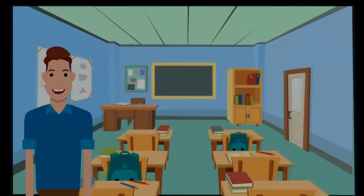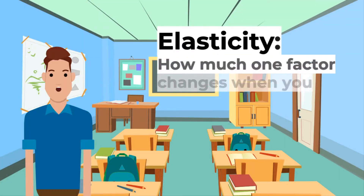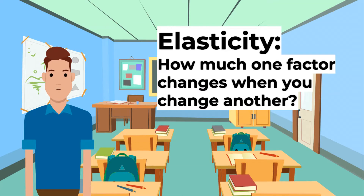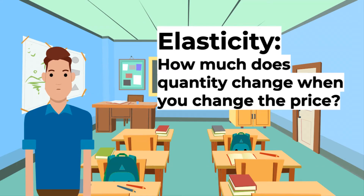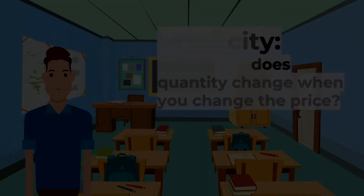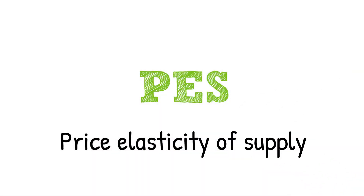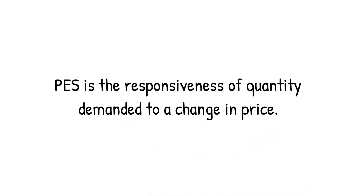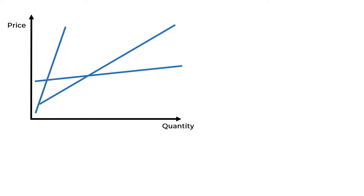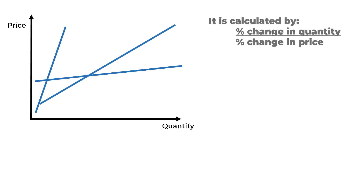Elasticities are basically how much one factor changes when you change another — for instance, how much does quantity change when you change the price. PES, price elasticity of supply, is the responsiveness of quantity supplied to a change in price. You can think about price elasticity of supply as the shape of the supply curve.